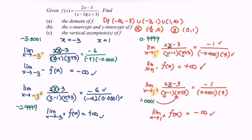These are the behaviors as x approaches negative 3 and x approaches 1 from the left and right. That concludes question 2. Thank you.